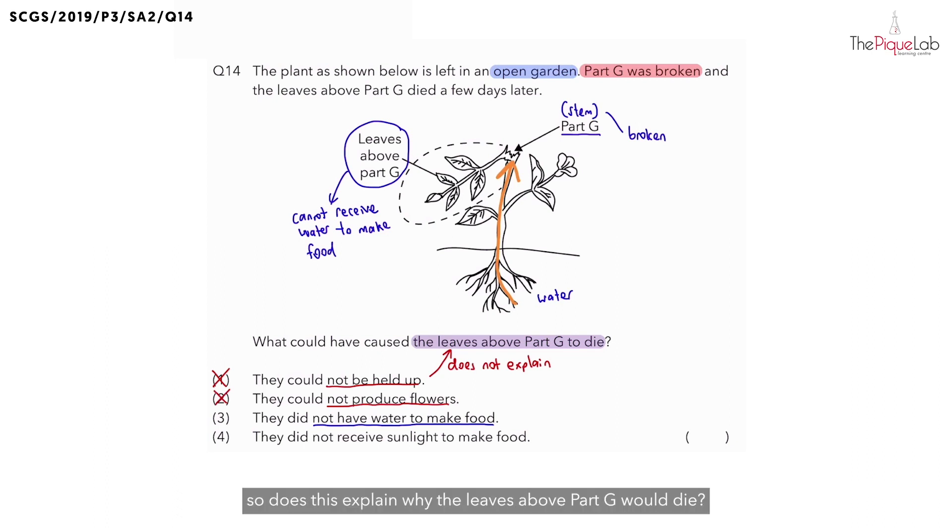So does this explain why the leaves above part G would die? Definitely. So is option three possible? Yes. But let's take a look at option four just to be safe.